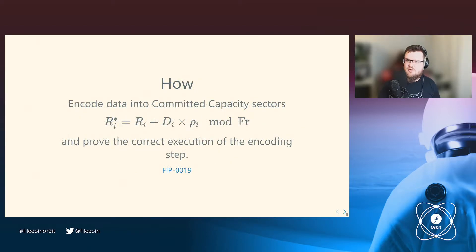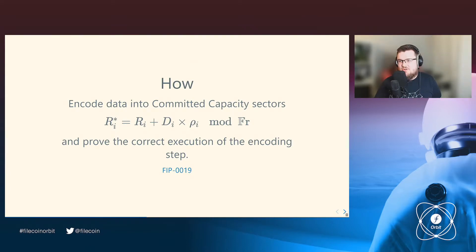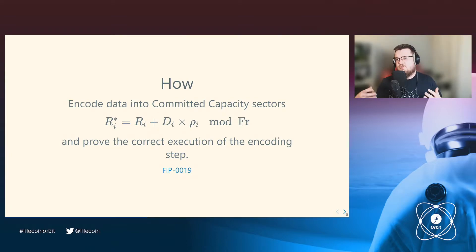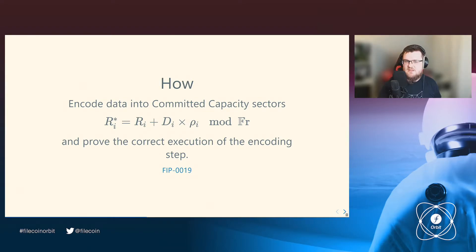How do SnapDeals work? In essence, we encode clients' data into the committed capacity sector with modular multiplication and addition. It's not an easy-to-comprehend step, but in essence it works like storing data into the sector. We don't store the pure data into the sector — we randomize it first to preserve some properties of sealed sectors.